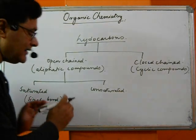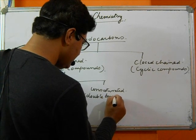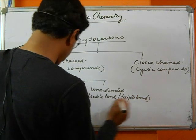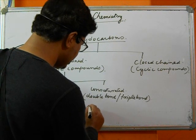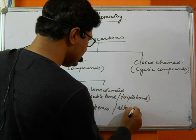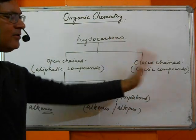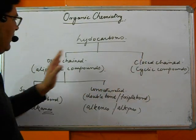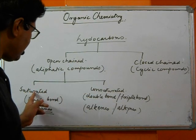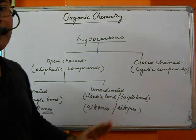So hydrocarbons divide into open-chain compounds — also known as aliphatic compounds — which are further divided into saturated compounds (single-bonded) and unsaturated compounds (double and triple-bonded). Both saturated and unsaturated are types of aliphatic compounds under the open-chain category.